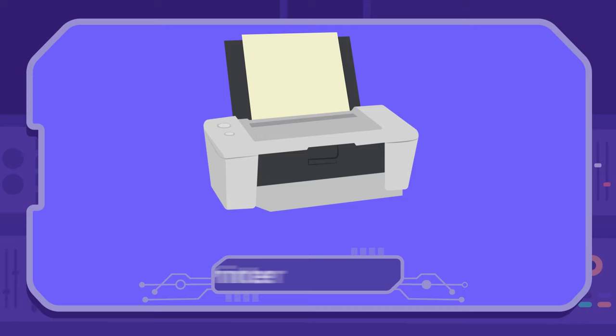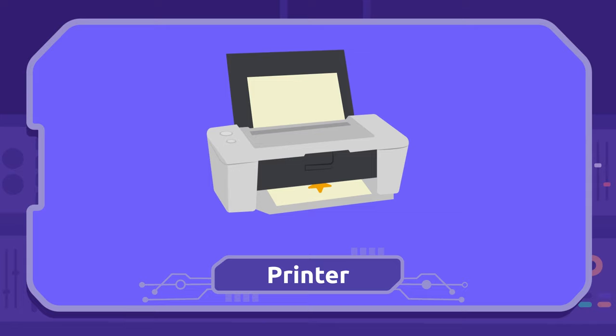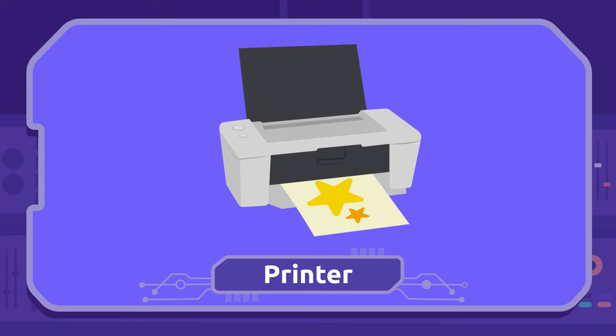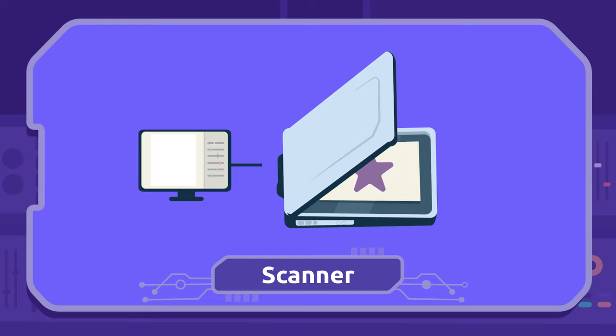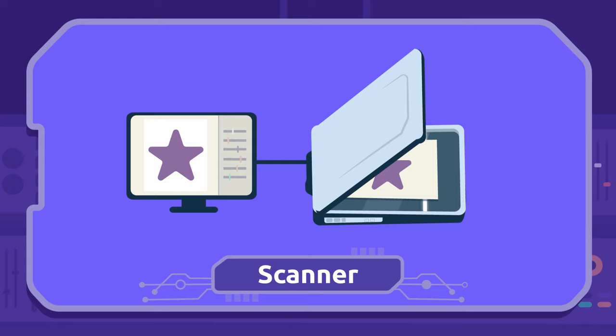We use the printer to put texts and images from the computer onto paper. This is called printing. Printer. We use the scanner to pass documents and images from paper to the computer. Scanner.